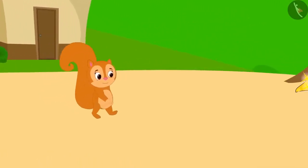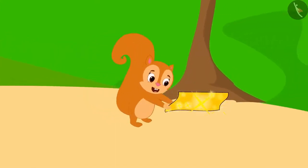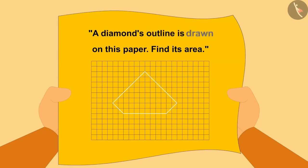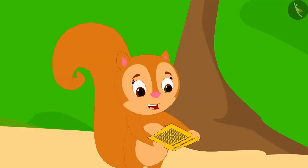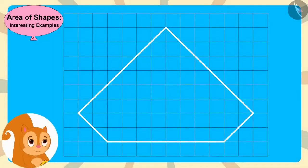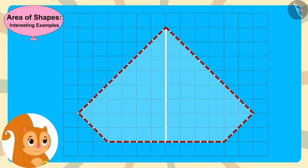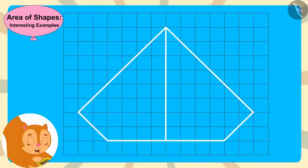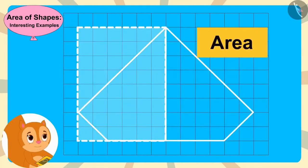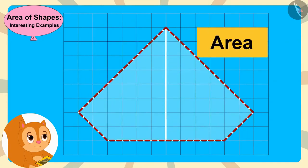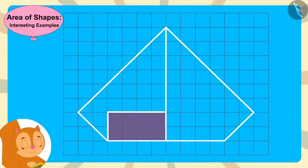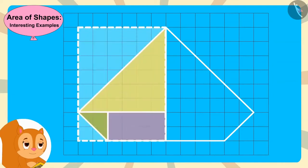Chanda was returning home from her shop when she saw a shiny paper under a tree. A diamond's outline is drawn on this paper — find its area — Chanda read the instructions. Chanda got excited and thought the diamond's outline is made of two equal parts. She drew a vertical line inside the outline of the diamond. Because the diamond is made of two equal parts, if she found the area of one part and multiplied by two, she would get the area of the entire diamond. Chanda then made rectangles and triangles in one part of the diamond's outline.